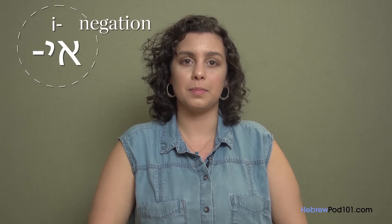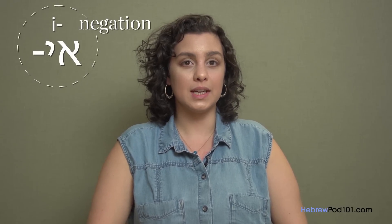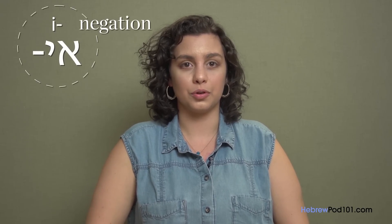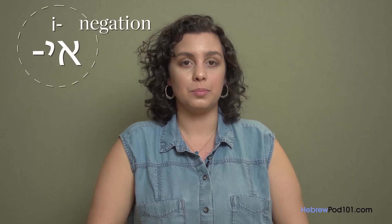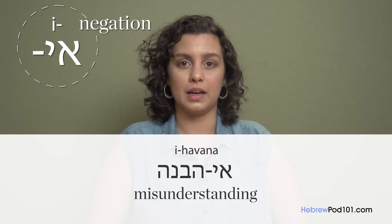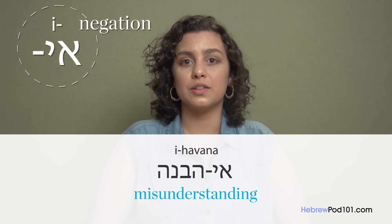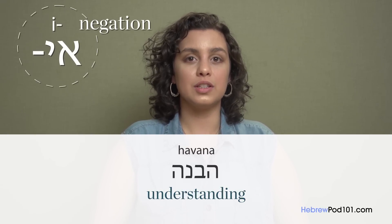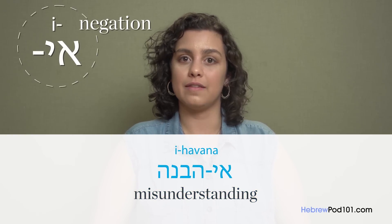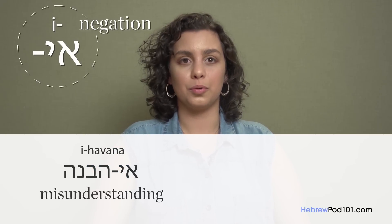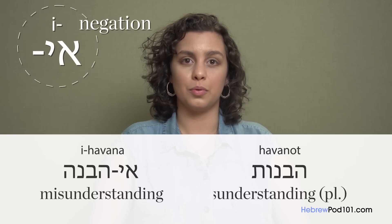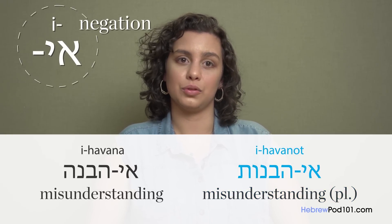Our last tip is about the plural form. The prefix has no influence on the gender of the word. The word will take its plural form, if it has one, and the prefix will stay where it is. For example, understanding is 'havanah,' so misunderstanding is 'i havanah.' The plural form of understanding is 'havanot,' so the plural form of misunderstanding is 'i havanot.'